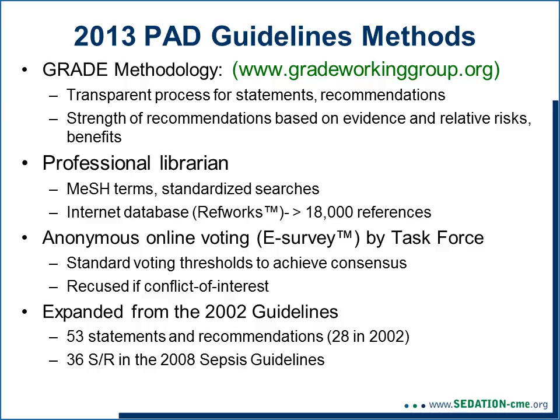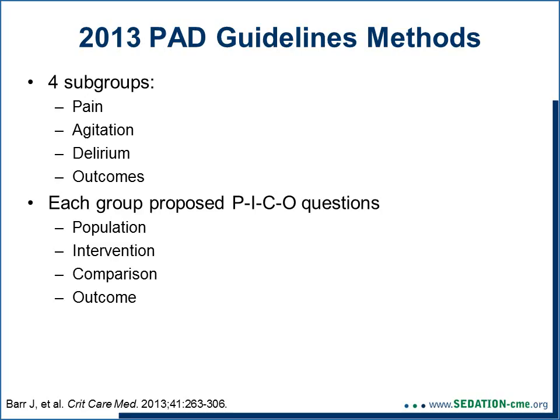By comparison, there were only 28 recommendations in the 2002 guidelines and only 36 in the 2008 sepsis guidelines. The task force broke up into four subgroups, each dealing with pain, agitation, delirium, and outcomes.